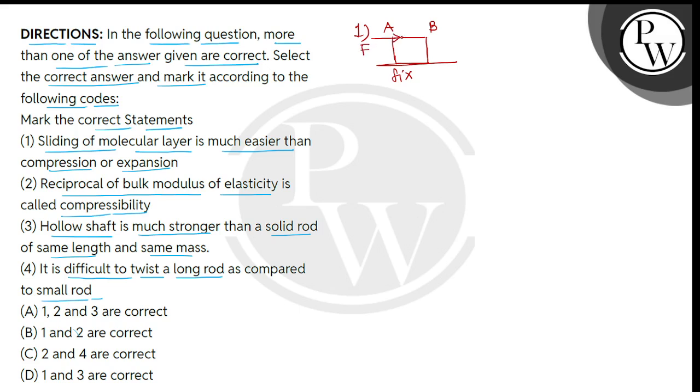To bachayon A point displace ho jata hai A dash par. And B point displace ho jata hai B dash par. And we can see that here a angle of shear ban jata hai theta. Jiski value mil jayegi hameh x divided by L. Jis mein se x lateral displacement. Aur jo L hai wu perpendicular distance between the fixed layer and the displaced layer.